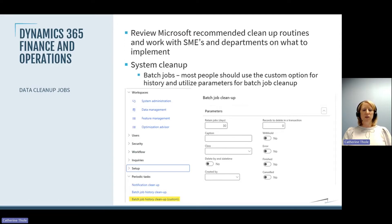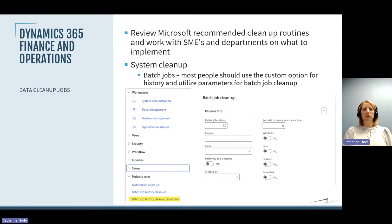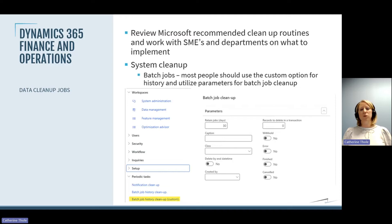You could also say you want to start by just deleting everything that errored, finished, or was canceled. If you're doing this for the first time or you have a lot of data, I definitely recommend that in the records to delete in a transaction you do not leave that at zero — that will try to do everything at once. You want to do a subset of records at a time because if you have 45 million records and try to run this, it could cause a high load on your system. We want this to run easily and without much impact, so we don't hold up other batch jobs.